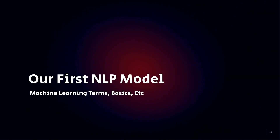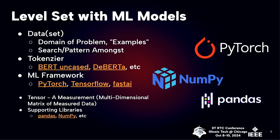Our first NLP — natural language processing — model. I'll cover some terms. When you're building machine learning models, you need data. We typically call them datasets, but just think of it as a huge collection of data specifically around the domain you're building a model for. Because we're building natural language models, that's words, sentences, phrases, paragraphs, and speech. The idea is you build a classifier — one type of model — to search for patterns amongst your data.